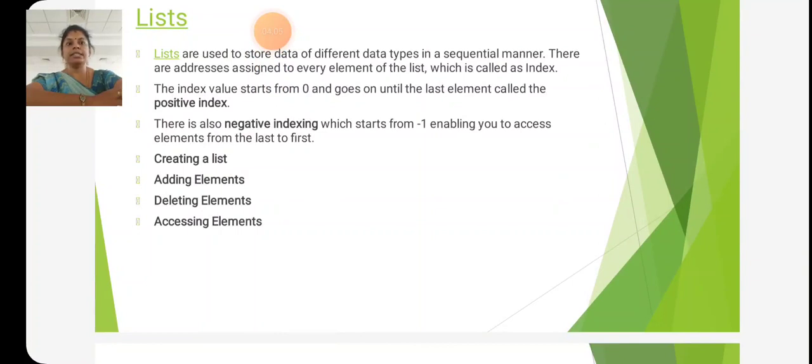There are addresses assigned to every element of the list, which is called an index. The index value starts from zero and goes on until the last element, called positive index. There is also negative indexing which starts from -1, enabling you to access elements from the last to first.